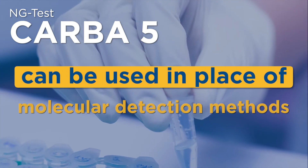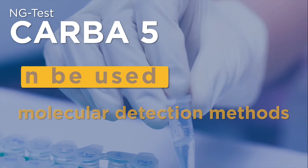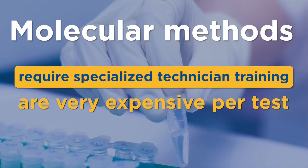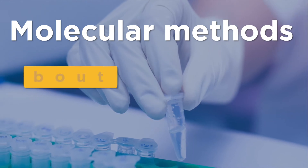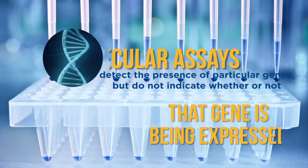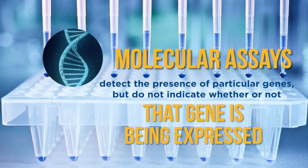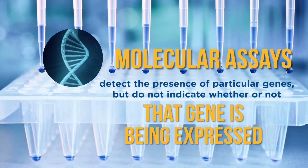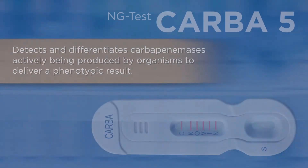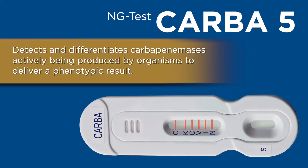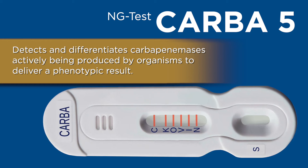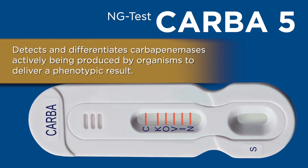NG-Test CARBA-5 can be used in place of molecular detection methods. Molecular methods require specialized technician training, are very expensive per test, and can take about two to three hours for a result. Additionally, molecular assays detect the presence of particular genes but do not indicate whether or not that gene is being expressed. NG-Test CARBA-5 detects and differentiates carbapenemases actively being produced by organisms to deliver a phenotypic result.